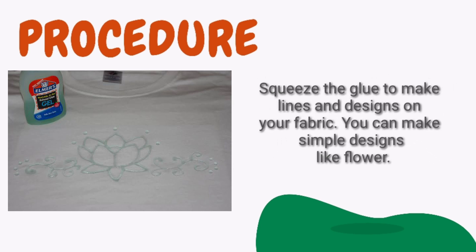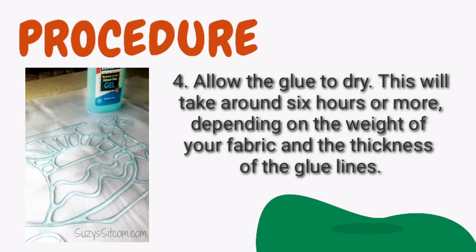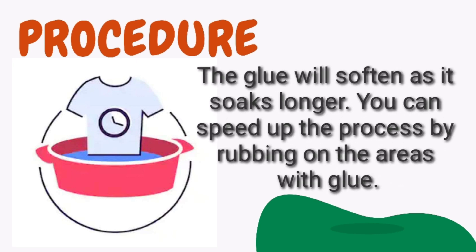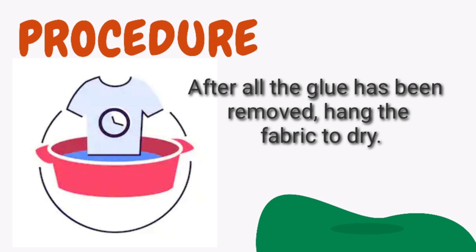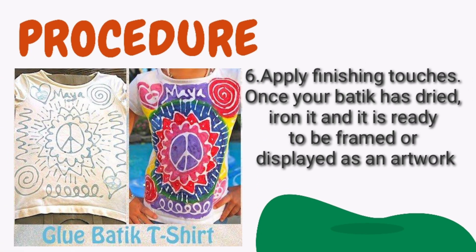Make your batik design with glue. Place plastic wrap or a plastic placemat under your fabric in case the glue seeps through, then squeeze the glue to make lines and designs on your fabric. You can make simple designs like flowers, shapes, or any lines. For the fourth procedure, allow the glue to dry — this will take around 6 hours or more depending on the weight of your fabric and the thickness of the glue lines. For the fifth procedure, remove the glue by soaking the fabric in warm water for 15 to 30 minutes. The glue will soften as it soaks; you can speed up the process by rubbing the areas with glue. After all the glue has been removed, hang the fabric to dry. Finally, apply finishing touches: once your batik has dried, iron it and it is ready to be framed or displayed as an artwork.